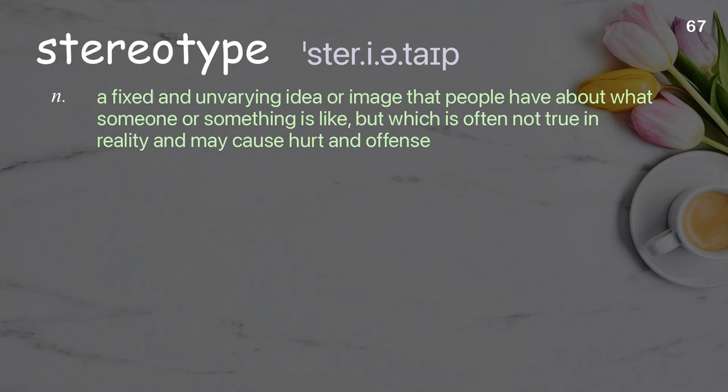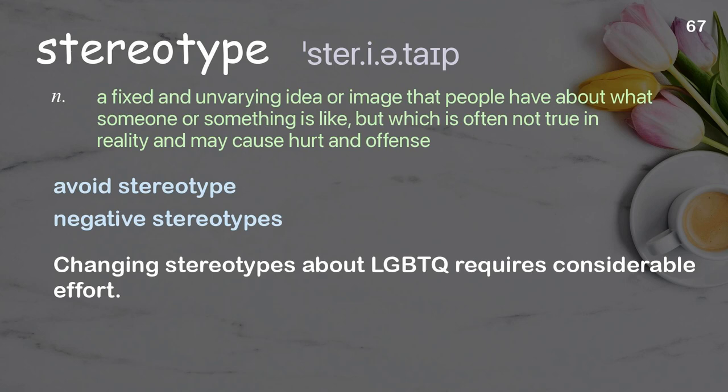Stereotype: a fixed and unbending idea or image that people have about what someone or something is like, but which is often not true in reality and may cause hurt and offense. Examples: avoid stereotype; negative stereotypes; changing stereotypes about LGBTQ requires considerable effort.